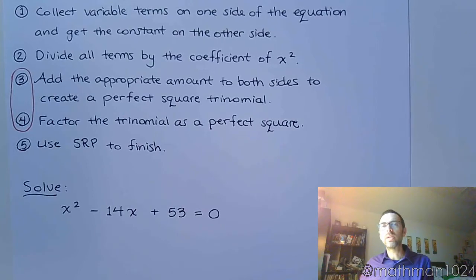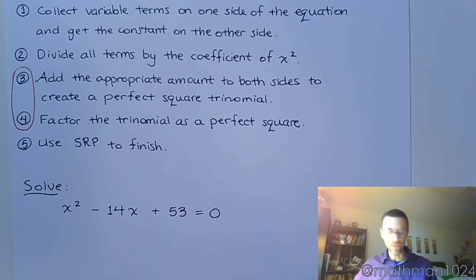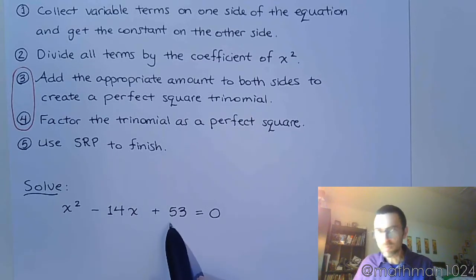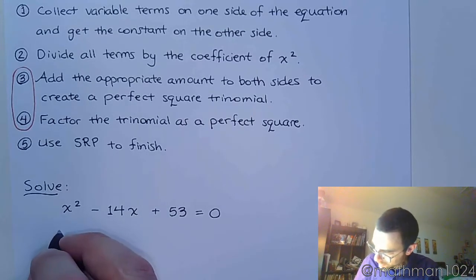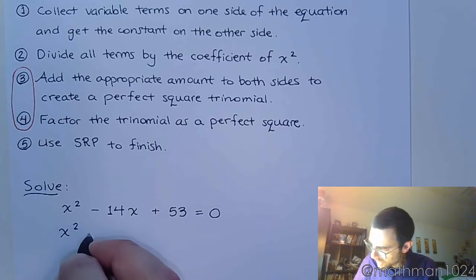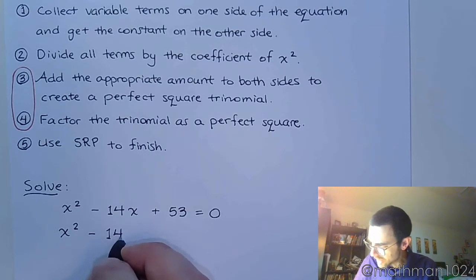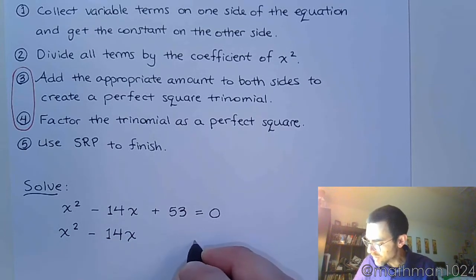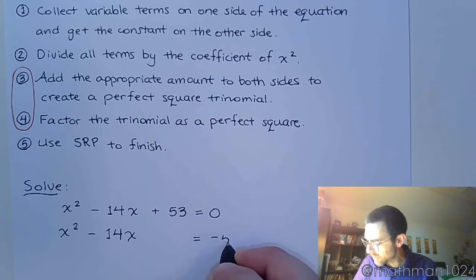x squared minus 14x plus 53 equals 0. So the first step is to move the variable terms on one side and get the constant on the other. So that's simple enough. Just move the 53 to the other side. So then we have x squared minus 14x. Leave some space. And then we have negative 53 on the other side of the equation.